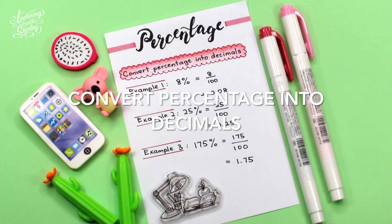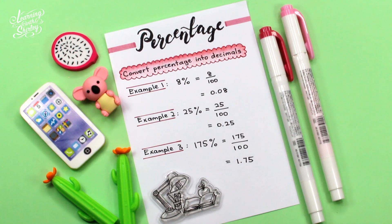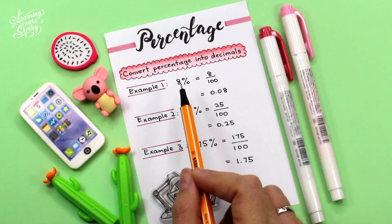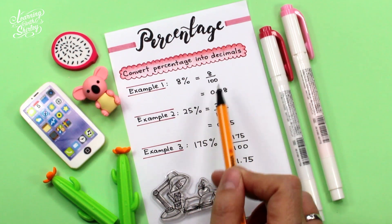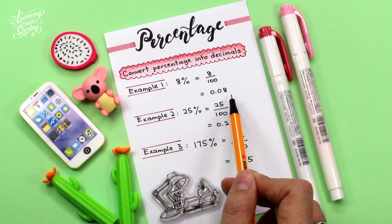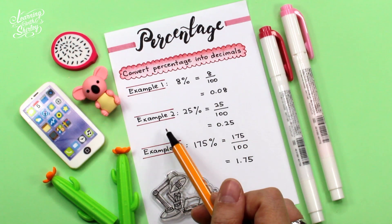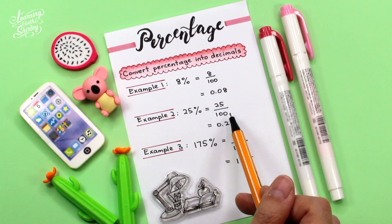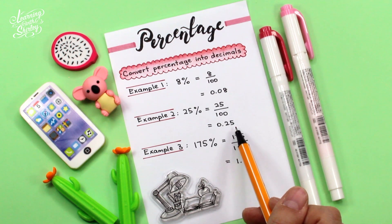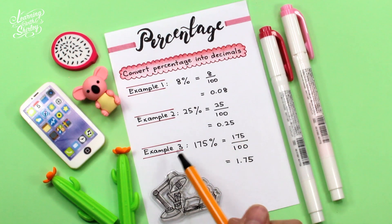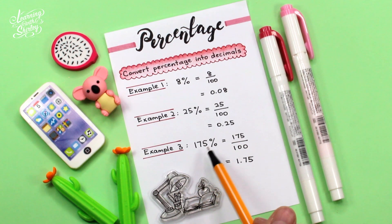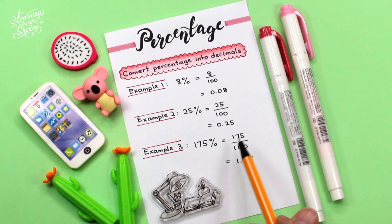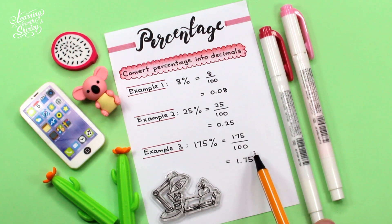How to convert percentage into decimals. Let's look at example one: 8% means 8 over 100, which is 0.08. Let's look at example two: 25% means 25 over 100, which is 0.25. Let's look at example three: 175% means 175 over 100, which is 1.75.